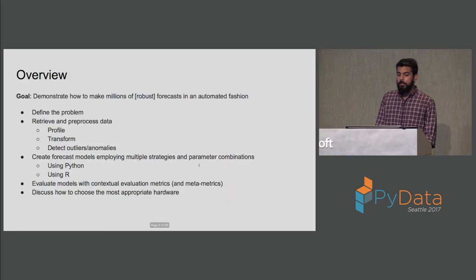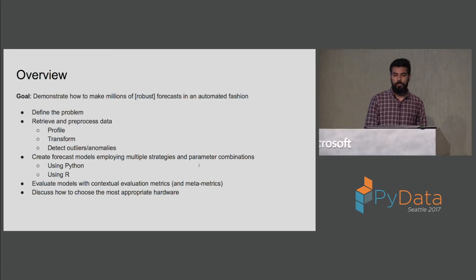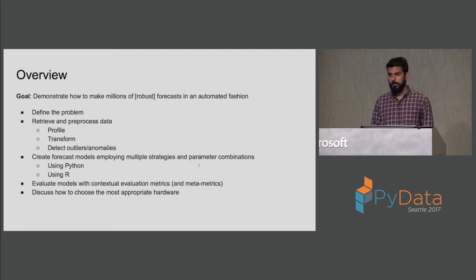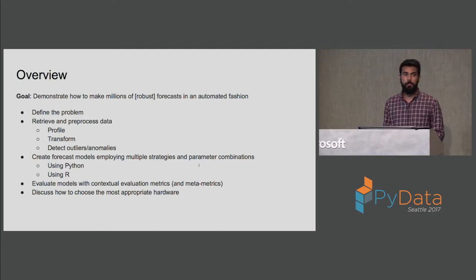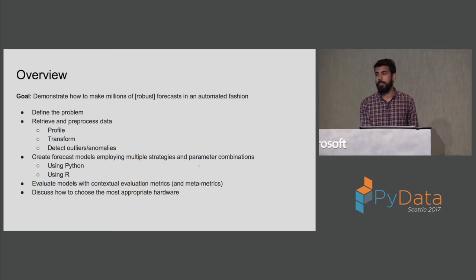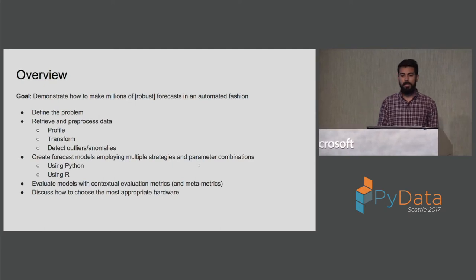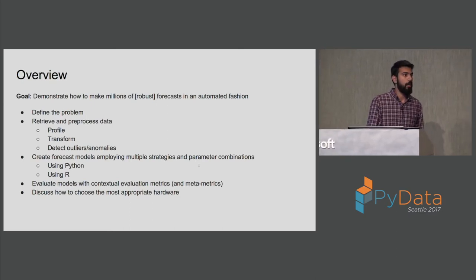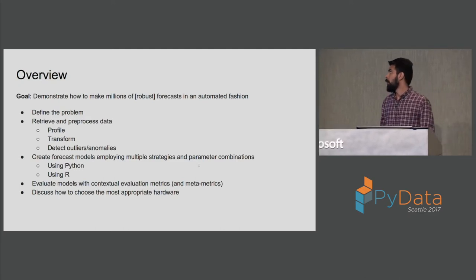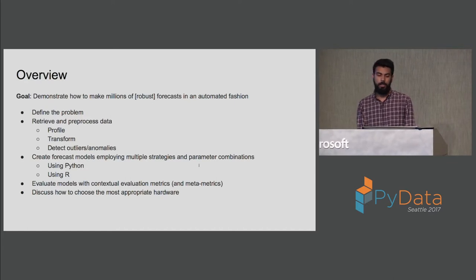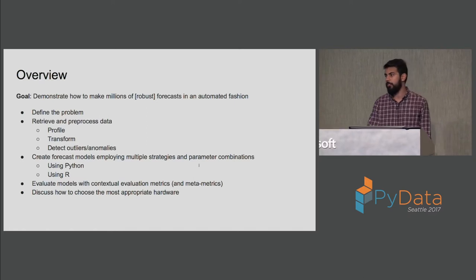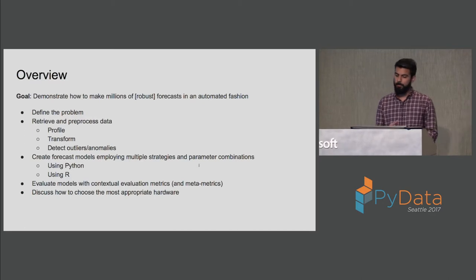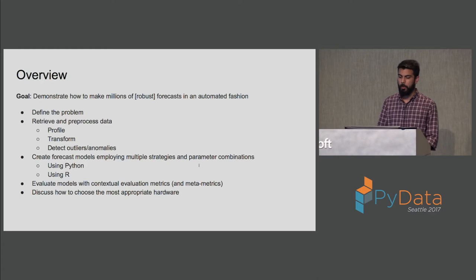The goal of this talk is to demonstrate how we can make millions of robust forecasts in an automated fashion. I'll define the problem, then walk through preprocessing steps: profiling the data, applying different transformations, and detecting outliers or anomalies. Then I'll cover forecasting strategies using Python and R packages, evaluation metrics to calculate forecast quality, and finally how to choose the best hardware for our use case.